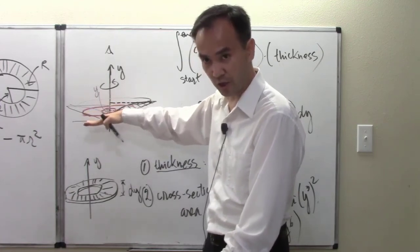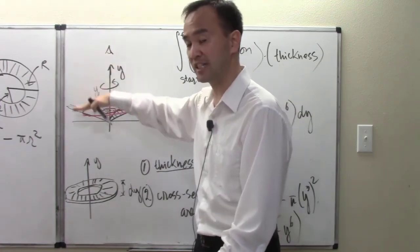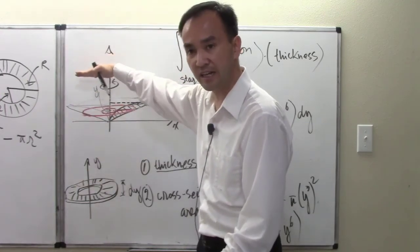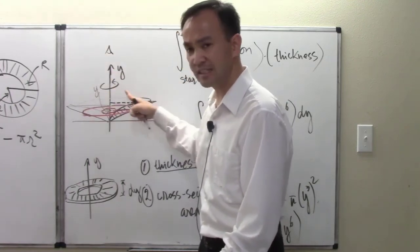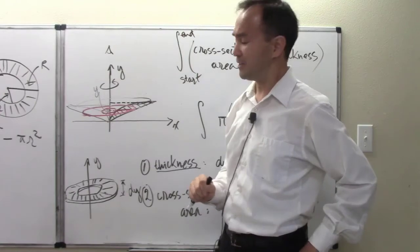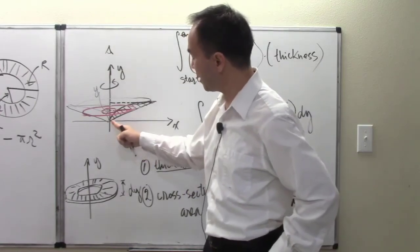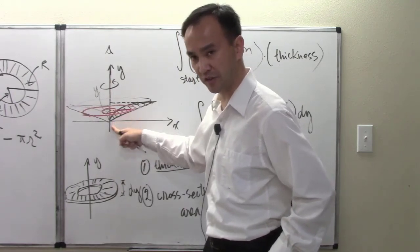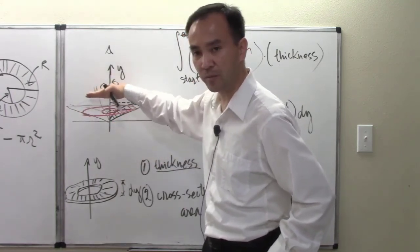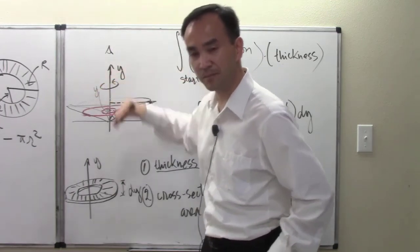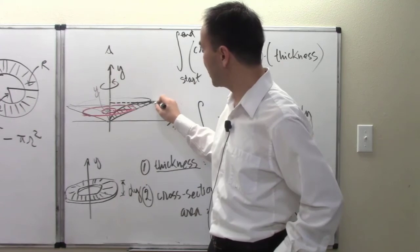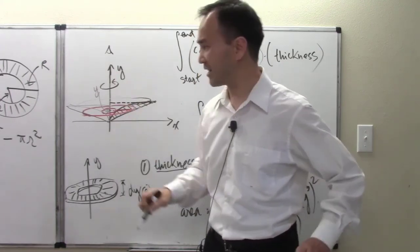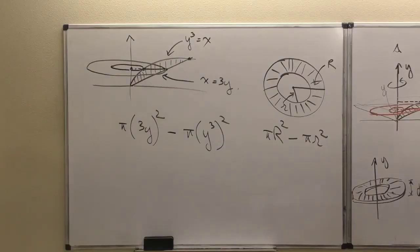The washers are stacked horizontally, perpendicular to the vertical y-axis. We accumulate from the bottom of the region to the top, so we need to find the y values corresponding to the bottom and top of the region — that is, the crossing points of the two curves in terms of y.